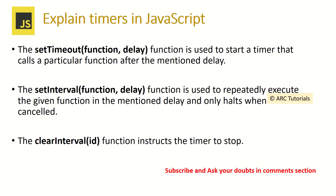The first question is: explain timers in JavaScript. There are three types of timers: setTimeout, setInterval, and clearInterval. setTimeout is used to start a timer that calls a particular function after the mentioned delay. setInterval is used to repeatedly execute the given function at a mentioned delay and only halts when cancelled. clearInterval is used to instruct the timer to stop. Make sure you take note of them and understand them clearly.